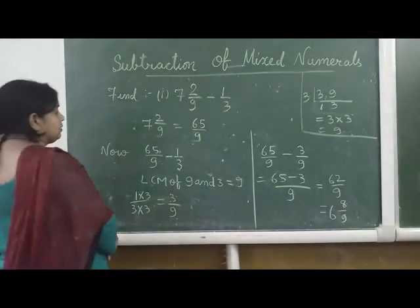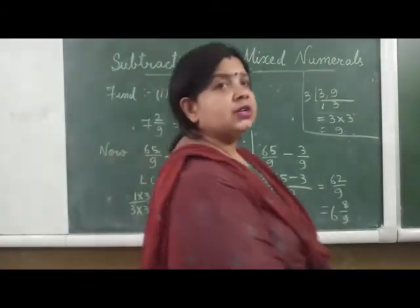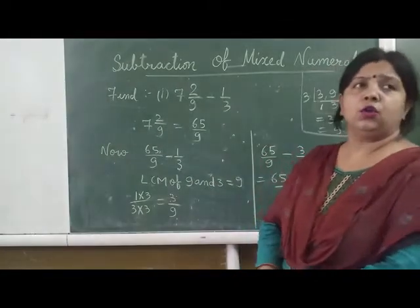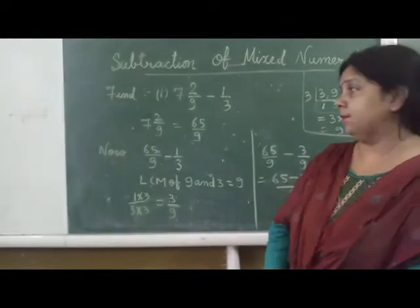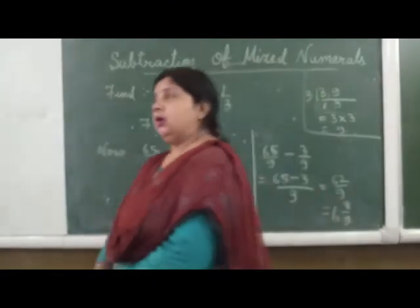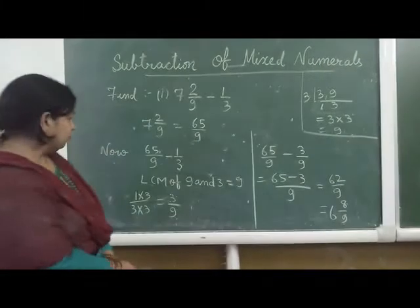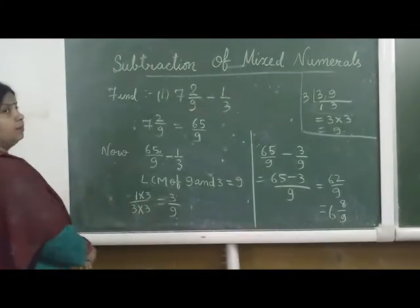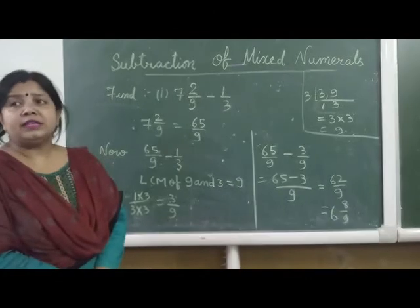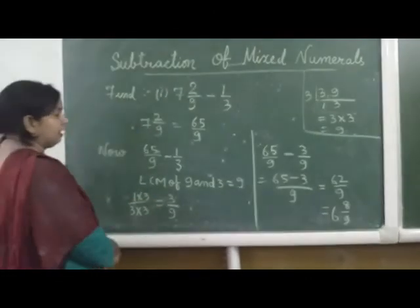Here students, 65 by 9 already has denominator 9. So there is no need to change it into an equivalent fraction. But here we have to change 1 by 3 to get the same denominator. So we multiply both numerator and denominator by 3, and we get 3 by 9.